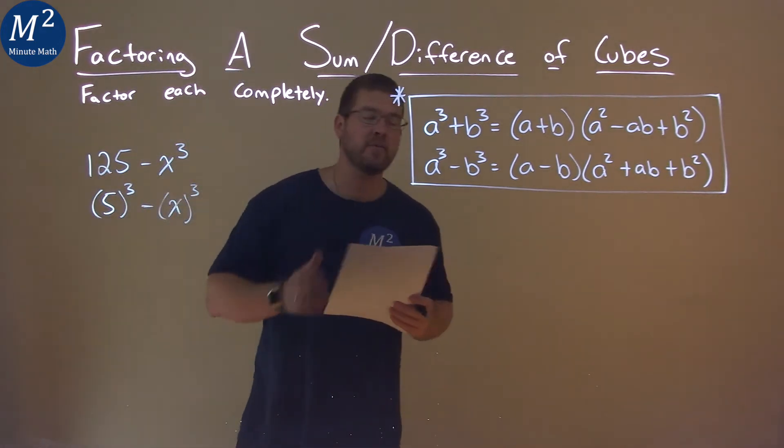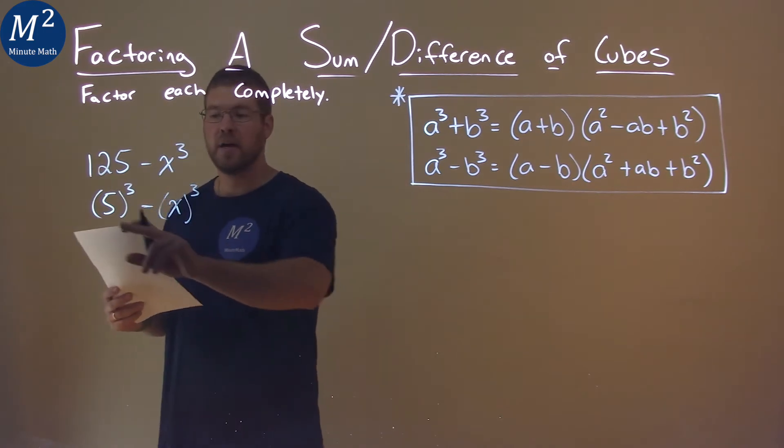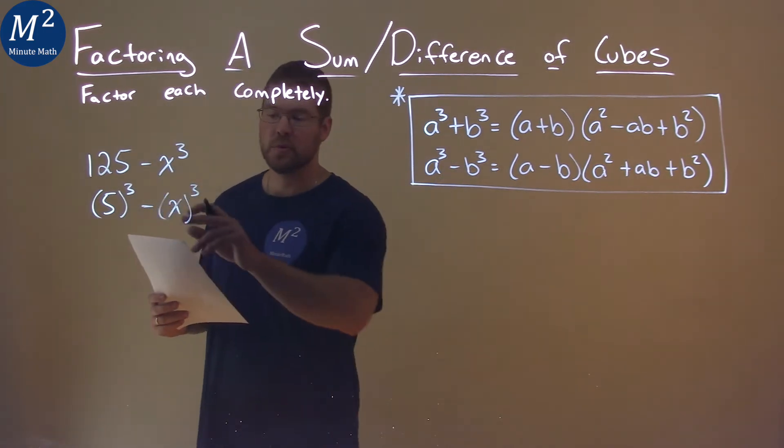And now we can use our difference of cubes formula. Our a value will be 5, and our b value will be x.